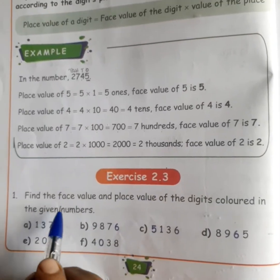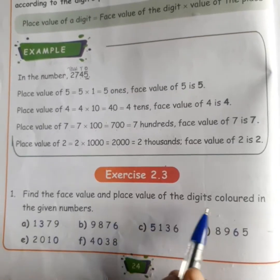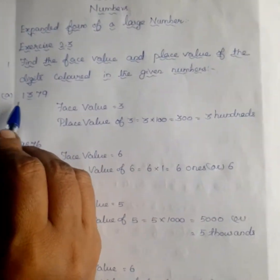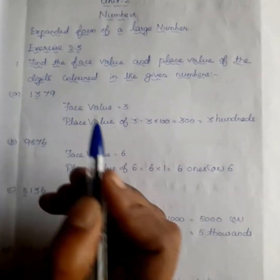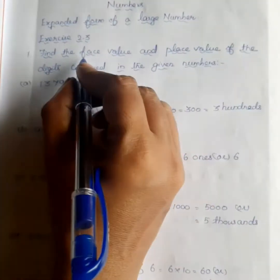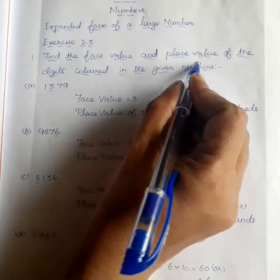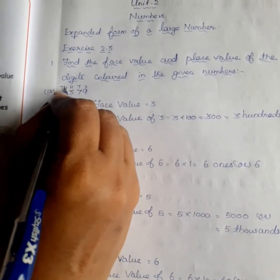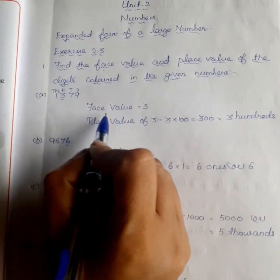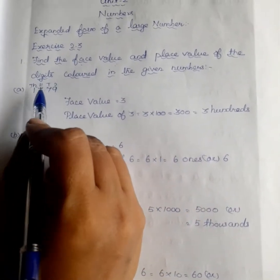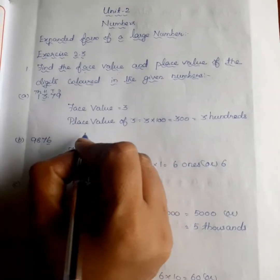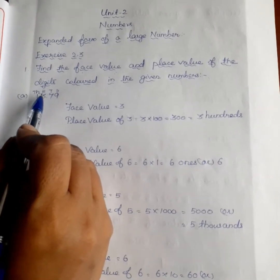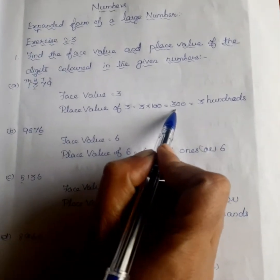Exercise 2.3 — find the face value and place value of the colored digits in the given number. For 1379, the places are 1, 10, 100, 1000. The face value of 3 equals 3. The place value of 3 is 3 into 100, which equals 300.